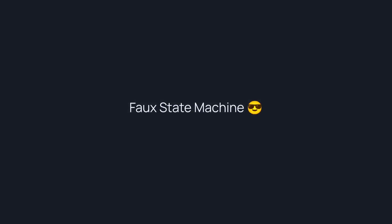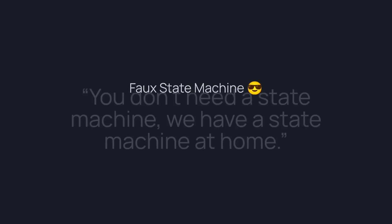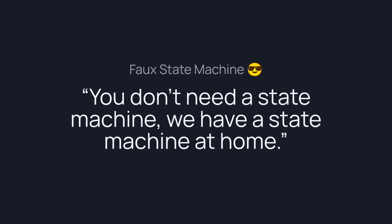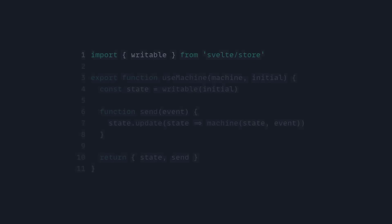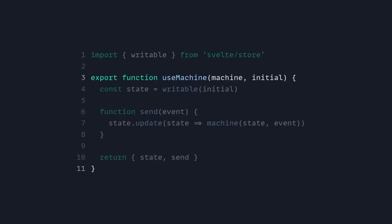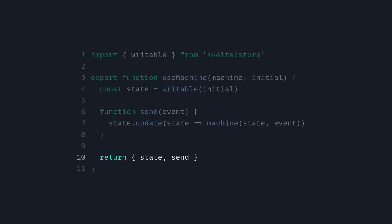But instead of using a reducer, let's create a simple state machine. This is a sort of 'state machine at home'. Let's look at how we can use a Svelte store for a machine. This time it's different because state machines are event driven. So we're going to create a function 'use machine', which we pass the machine and the initial state to. Now we have state from the writable, and then we create a send function which is going to update the store. Then we return state and send.